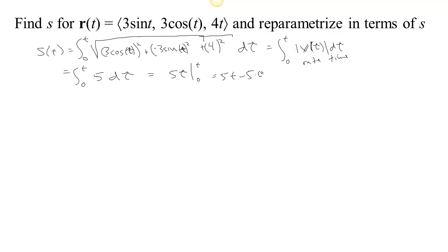And so we get 5t. So on this curve, we're moving at a constant speed. The speed is 5 units per unit of time. 5 distance units per unit of time. And so if you wait t time units, then you will have traveled a distance 5 times the number of time units.